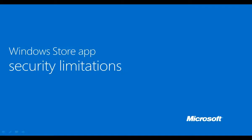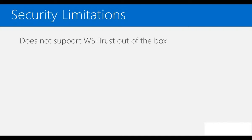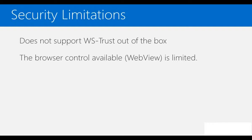Before jumping into details of claims-based authentication, let's look at some limitations for Windows Store applications. The Windows Store application development model does not support WS-Trust out of the box, meaning we cannot authenticate against SOAP-based web services protected using WS HTTP binding. However, we can authenticate against REST-based services. For providers like Facebook and Microsoft account, we redirect the user to the identity provider's website. While a WebViewControl can technically work, it is not recommended because WebView was never designed for authentication purposes and is not very secure.